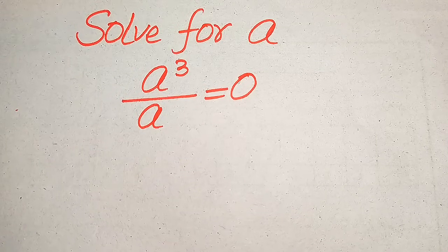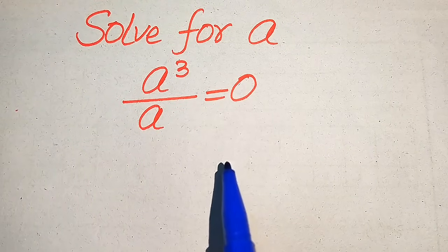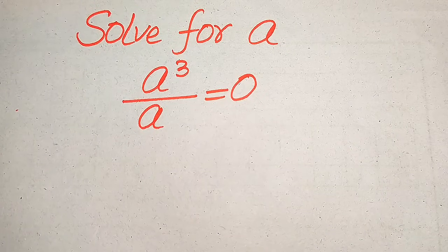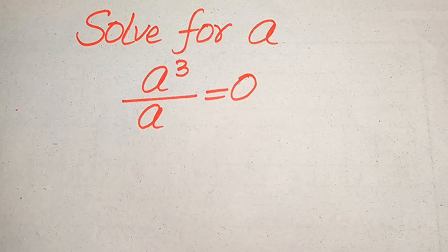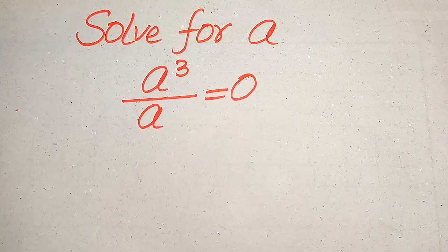Hello everyone. How to solve this problem for the values of a if we have a cubed divided by a equals 0? We solve this problem for all the values of a. First we find all the roots of this equation, and at the end we will verify which of the roots are a solution and which are extraneous roots. I will also explain the term extraneous root at the end of this video, so please watch the complete video.